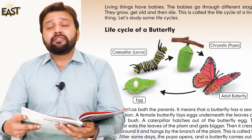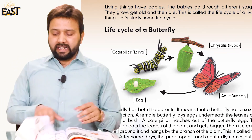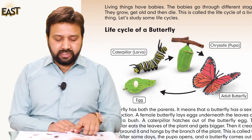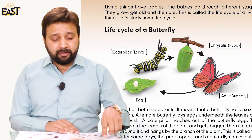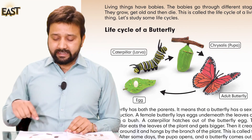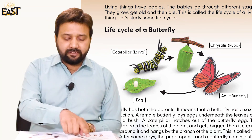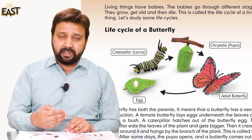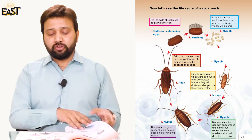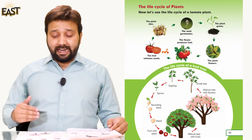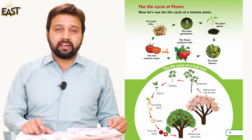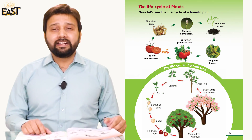Your home assignment for today is the life cycle of a cockroach. You have to draw it on a page and repeat the words written with the life cycle. Take a picture and submit it to your teacher. Also draw the life cycle of a butterfly, and if you want, you can add the life cycle of a fruit tree as well. Take a good picture and submit today's homework assignment to your teacher. Take care, Allah Hafiz.